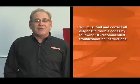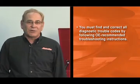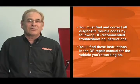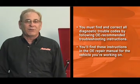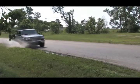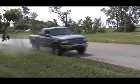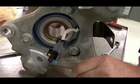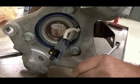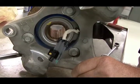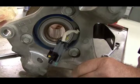Remember, before proceeding any further, you must find and correct all diagnostic trouble codes by following OE recommended troubleshooting instructions. You'll find these instructions in the OE repair manual for the vehicle you're working on. Sometimes a rough road will cause torque to be applied to the drivetrain resulting in false misfire codes. Many powertrain control modules will use input from the ABS wheel speed sensors to tell the PCM the vehicle is on a rough road and then ignore the misfire codes.